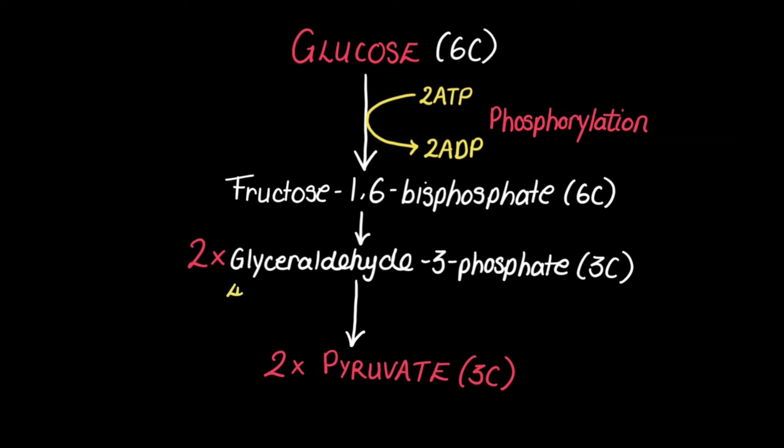During this stage of the reaction, four ATPs are produced from four ADPs. In addition, an electron carrier is used. Two NAD+ are reduced into two NADH.